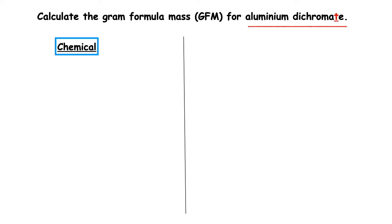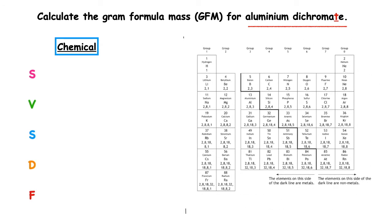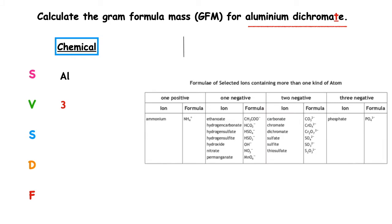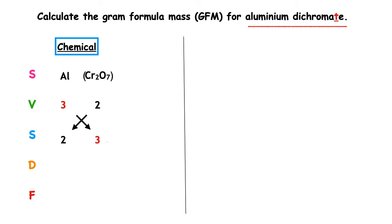Calculate the gram formula mass of aluminium dichromate. It ends in '-ate', so we use page 8 to work out the formula. We start with our SVSDF. The symbol for aluminium is Al, found in group 3, valency 3. Dichromate has the chemical symbols Cr₂O₇ — we keep a bracket around that, and it has a valency of 2. We swap the valencies over; the highest number both can be divided by is 1. 2 divided by 1 is 2; 3 divided by 1 is 3. So the formula is Al₂(Cr₂O₇)₃.